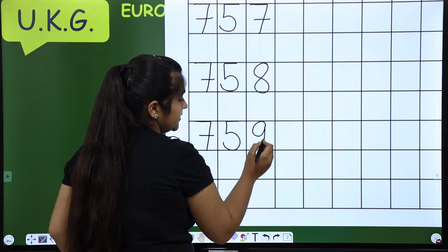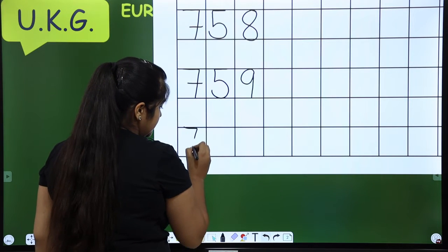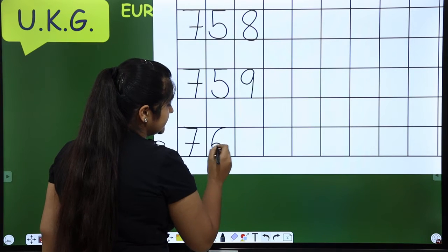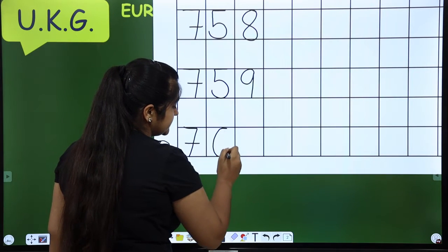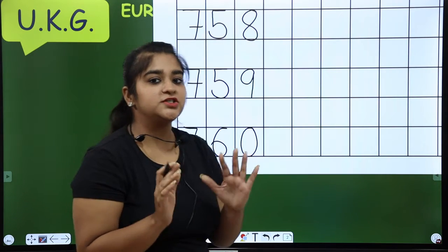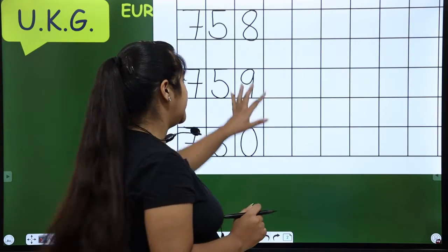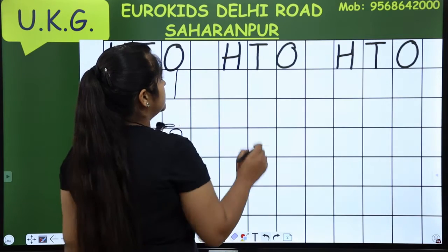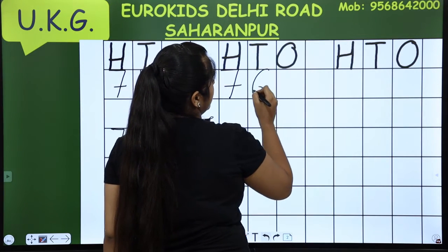758, 759. And now what will happen? 7 as it is. And what comes after 59? 60. 760. Children, we need to erase the mistake. We have to ignore it. Okay? Now, next line starts with 761.